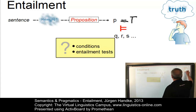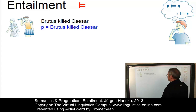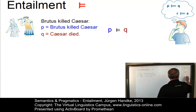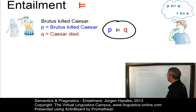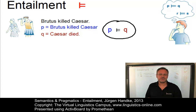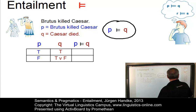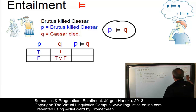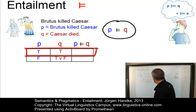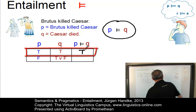Let us illustrate that with a first example. Take the following proposition P: 'Brutus killed Caesar.' This proposition entails Q: 'Caesar died.' Here is our representation: P entails Q. Now let us see under what conditions we have such an entailment relationship. If P is true — that is, Brutus actually killed Caesar — then Q, 'Caesar died,' is true too. So our entailment relationship holds.